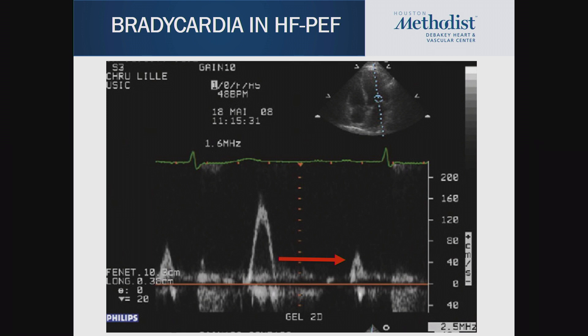If you see this type of Doppler pattern on echo in a patient being diagnosed with HFpEF, most of the filling has already occurred — this is wasted time. The patient has a fixed stroke volume. If you see this pattern, you are beta-blocking too much and the heart rate is too slow. Back off on the beta blockers so they can improve cardiac output by having a higher heart rate. This is an important clinical pearl when managing HFpEF patients.